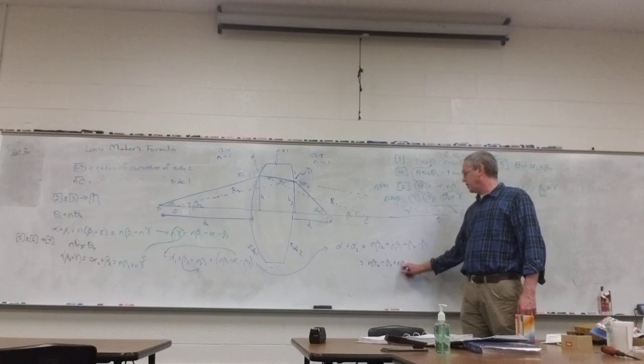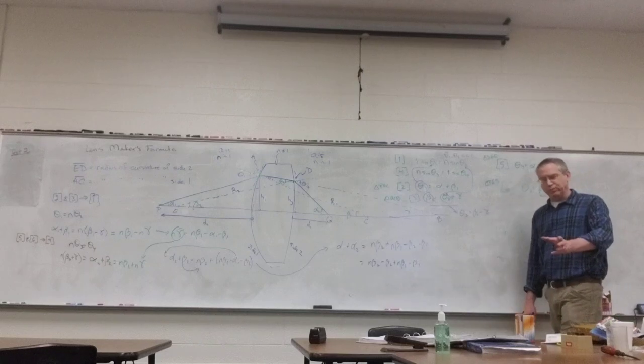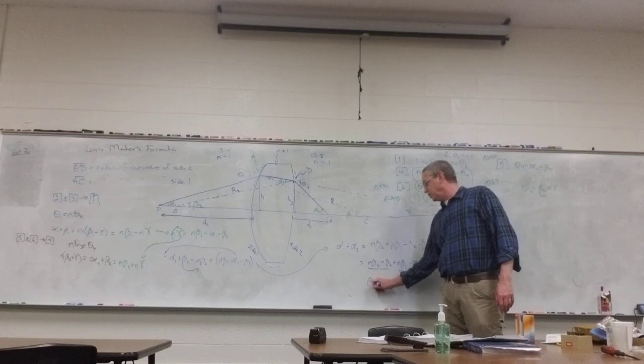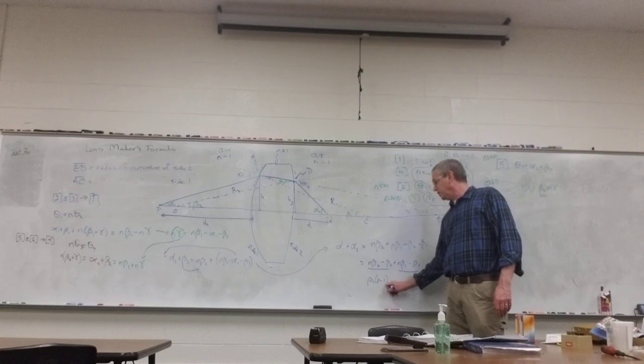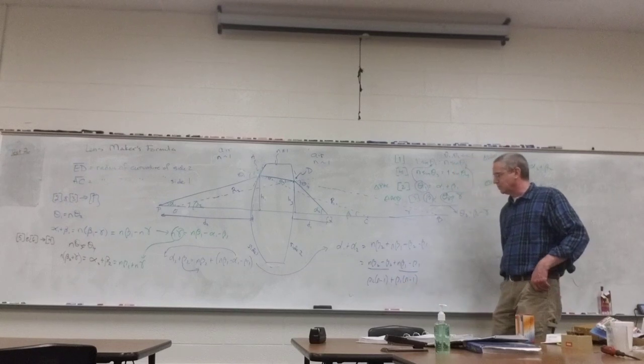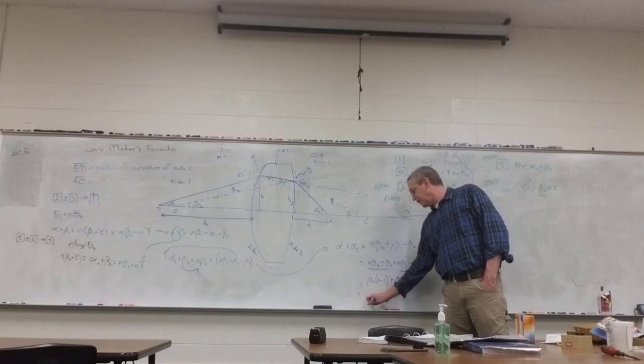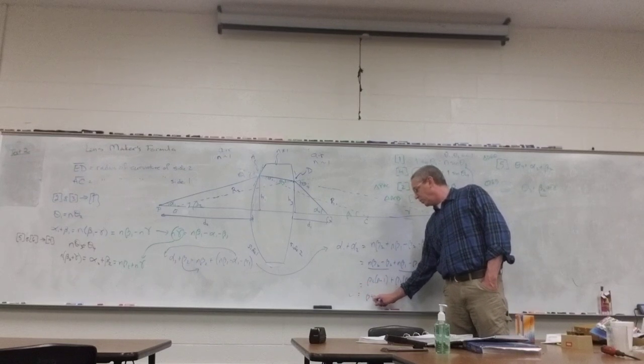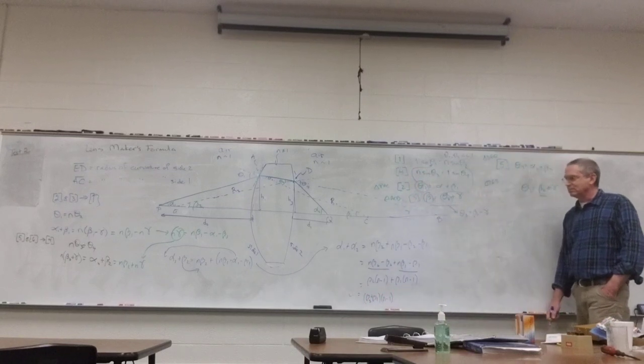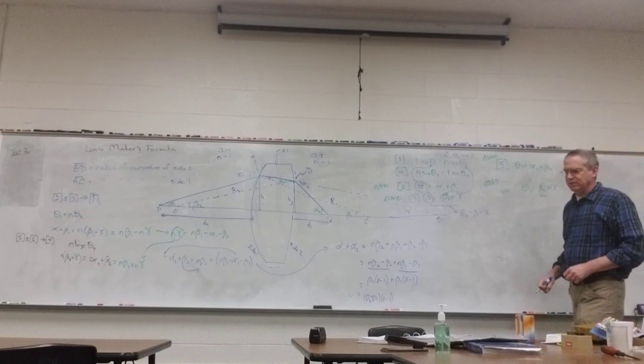This becomes alpha 1 plus alpha 2 on the left-hand side. And on the right-hand side, n beta 2 plus n beta 1 minus beta 2 minus beta 1. I'm doing a little factoring here. I can factor parts of that, so beta 2 times n minus 1 plus beta 1 times n minus 1, which can be factored one more time as beta 2 plus beta 1 times n minus 1.